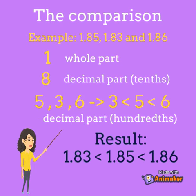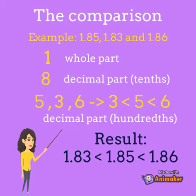We start by comparing the whole part. All three numbers have the same number, 1. So we have to compare the decimal part, starting with the tenths, and if necessary, we will continue to compare hundredths and finally thousandths. In this example, the tenths are also equal, since they have the same figure, 8. So, we keep comparing and we do it with the hundredths. Hundredths have different values, with the order from lowest to highest.